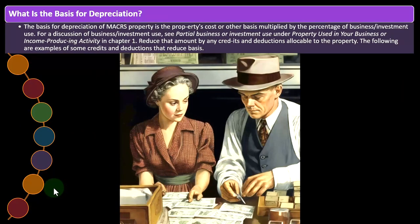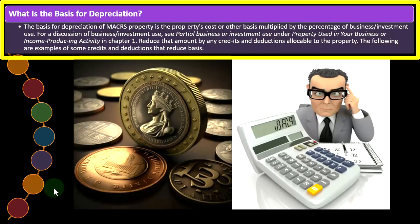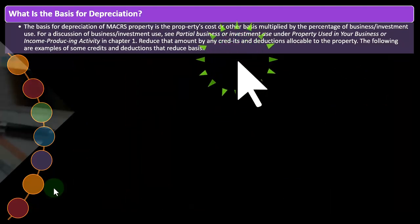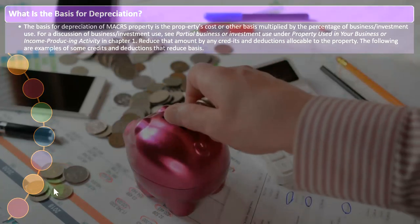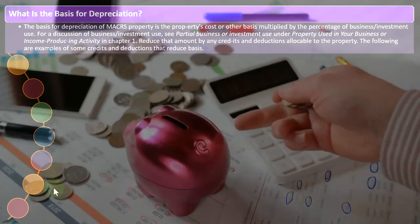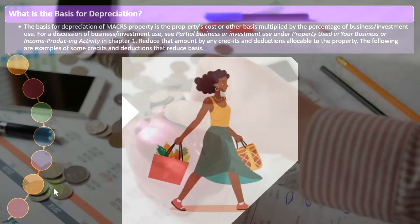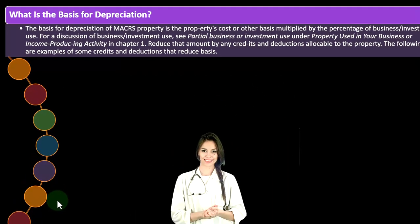So what is the basis for depreciation? We can think of the basis as similar to the cost or adjusted cost. The basis for depreciation of business property is the property's cost or other basis multiplied by the percentage of business or investment use. If we use it 100% for business, that's essentially the cost, but if it's partially personal use, we have to allocate between business and personal, which gets more complex.